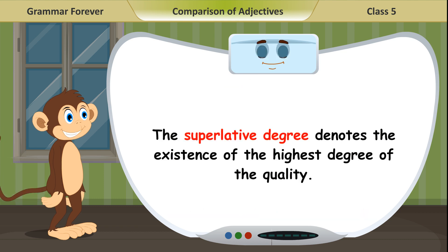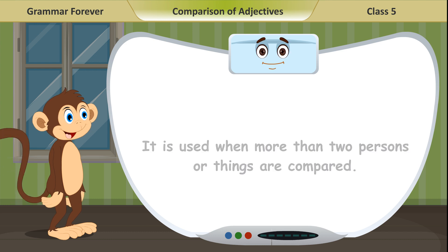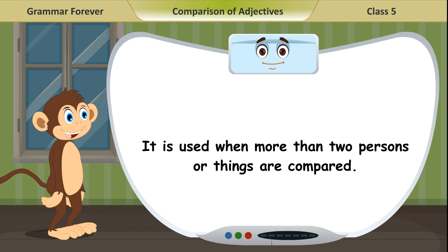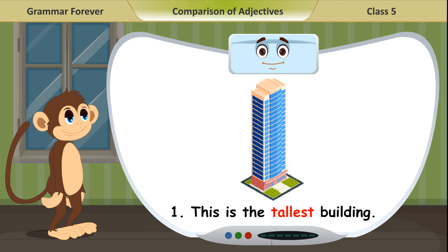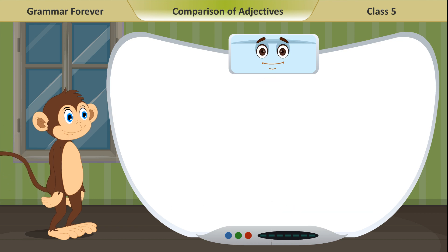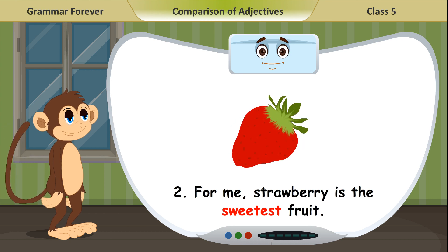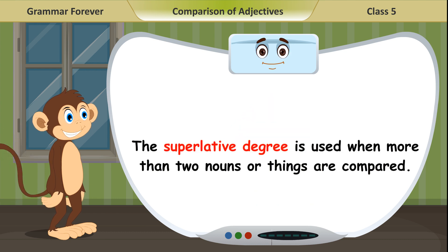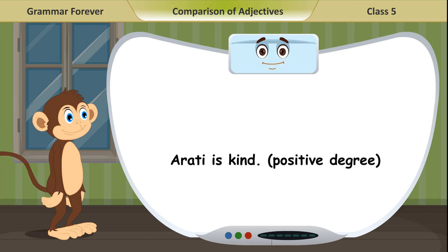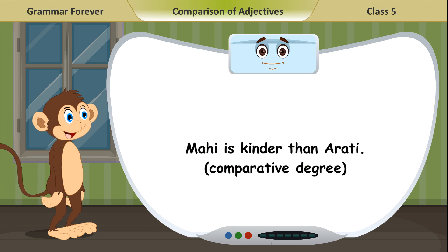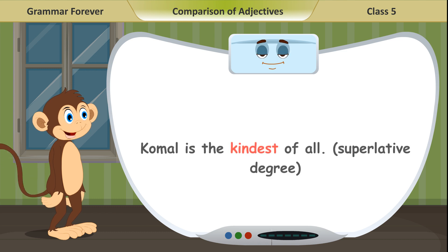The superlative degree denotes the existence of the highest degree of the quality. It is used when more than two persons or things are compared. Examples: 1. This is the tallest building. 2. For me, strawberry is the sweetest fruit. Example with all three degrees: Aarti is kind (positive degree). Mahi is kinder than Aarti (comparative degree). Komal is the kindest of all (superlative degree).